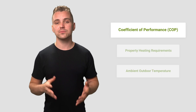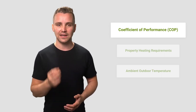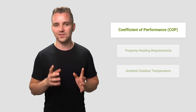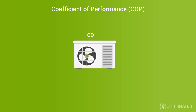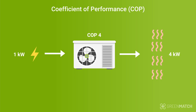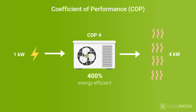An air source heat pump's coefficient of performance is a number that defines how many units of heat in kilowatts it can produce from a single kilowatt of electricity. For example, a heat pump with a COP of 4 will produce 4 kilowatts of heat for every 1 kilowatt of electricity it receives, making it 400% energy efficient. The higher a heat pump's coefficient of performance, the more efficient it will be.